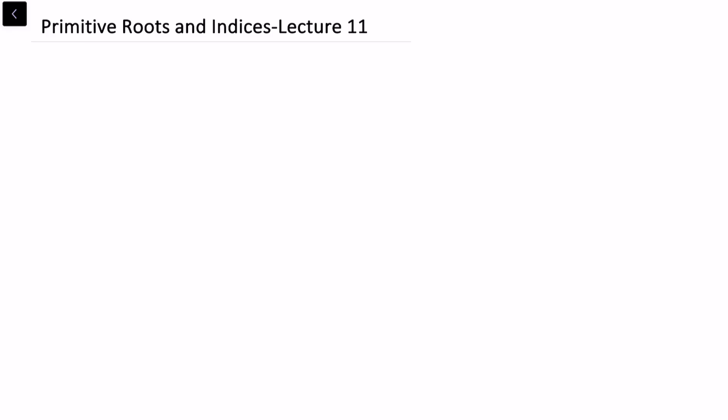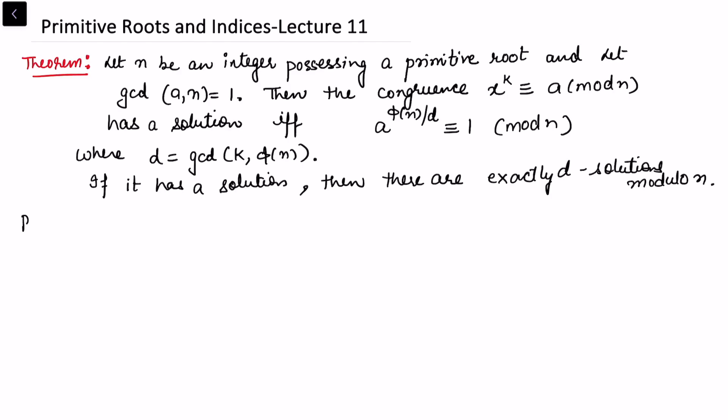This is the 11th lecture on primitive roots and indices, and here we will learn when a nonlinear congruence has a solution — what are the necessary and sufficient conditions. We have a theorem which explains the solvability criteria for nonlinear congruences.